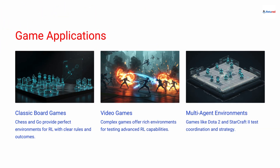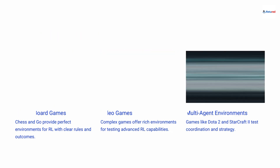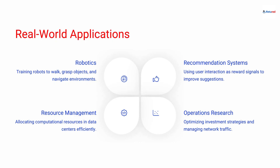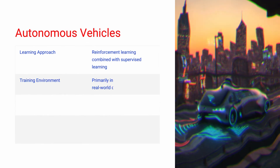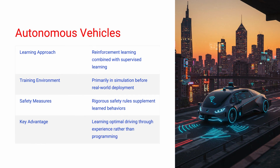Games have long served as a perfect testing ground for RL. Whether it's chess, Go, or complex video games, these environments offer clear rules and immediate feedback, providing the ideal setup for refining learning strategies. But RL's impact goes far beyond games. It powers innovations in robotics, teaching robots to walk, grasp, or navigate; improves recommendation systems by adapting to user feedback; and even optimizes operations in dynamic environments. Autonomous vehicles also leverage RL to learn optimal driving strategies, blending reinforcement and supervised learning for safe and efficient operation.